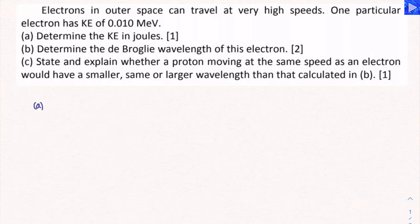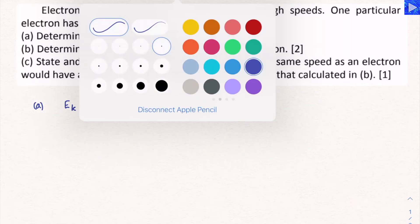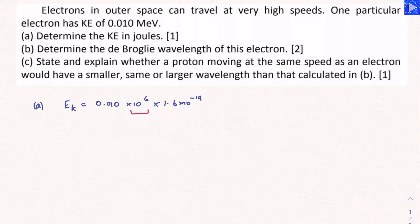Okay, so A requires us to convert from mega electron volts to joules. So the kinetic energy is 0.010 times 10 to the 6 because it's in mega electron volts, multiplied by 1.6 times 10 to the minus 19. That's our conversion for the electron volts to joules aspect. So that's for the mega, this is for the EV part. You can combine those, that's 1.6 times 10 to the minus 13 if you were to do it all together.